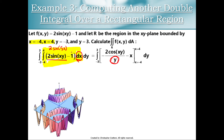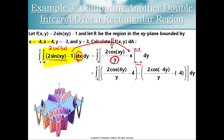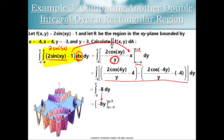The antiderivative of 1 with respect to x is x. Now we have to plug in x equals 4 and x equals negative 4 and subtract. There's some symmetry in our plot, and that symmetry produces beautiful cancellation in our algebra. This huge integral condenses down to the single integral from negative 3 to 3 of negative 8 dy. The antiderivative of negative 8 with respect to y is negative 8y. Plugging in y equals 3 and y equals negative 3 and subtracting, we get negative 48.